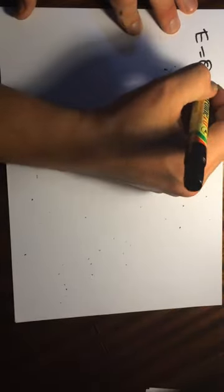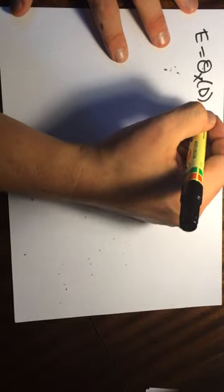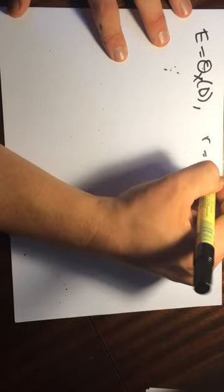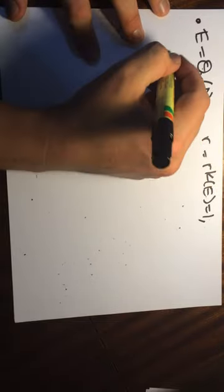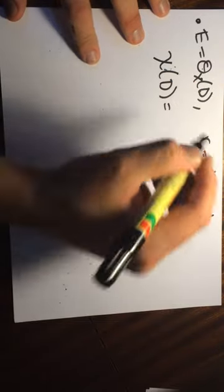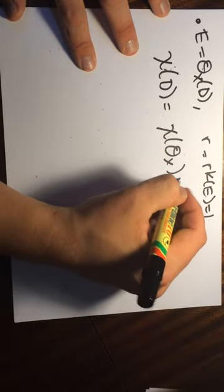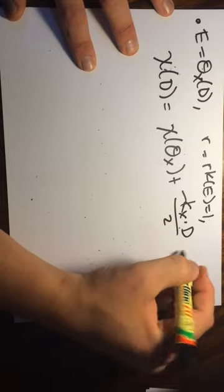So the special case when E is equal to the sheaf associated to a divisor. So then this tells us that r is the rank of E which is 1. So here's another special case. So we have chi of D is equal to, well, r. And then we just have chi of X plus minus K of X dotted with D divided by 2 plus.